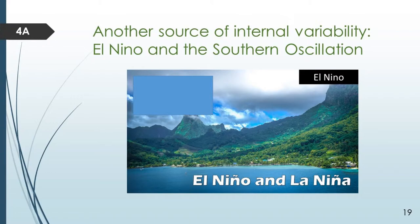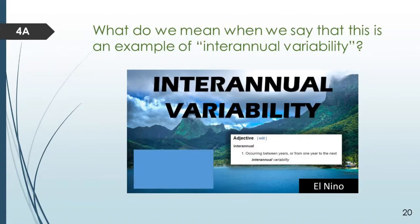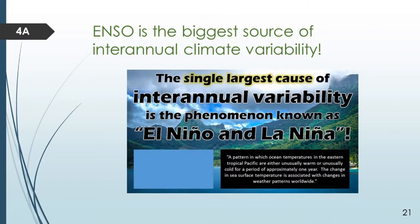After we talked about the monsoon, we moved on and started talking about El Niño and the Southern Oscillation — another source of internal variability. El Niño and the Southern Oscillation are about a natural source of variability within the climate system that produces what is known as interannual climate variability. Make sure you know that vocabulary word — interannual, as in occurring from one year to the next. El Niño, La Niña, and the Southern Oscillation is the single largest source of interannual variability known in the climate system. ENSO stands for El Niño and the Southern Oscillation.